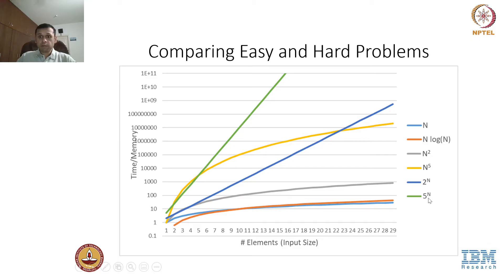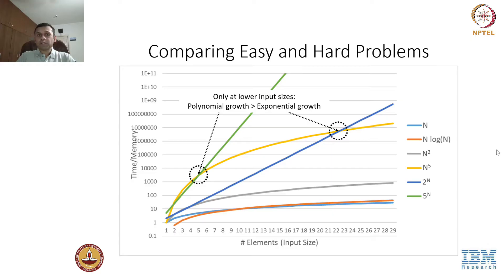At lower values, n to the power 5 can even dominate 5 to the power n and later also dominate 2 to the power n for a while. This means that at lower input sizes, a polynomial function can actually grow faster than an exponential function, depending on the polynomial degree and the base of the exponential. This means our classical computers that solve polynomially-growing problems are still going to be relevant when we have quantum computers. Quantum computers promise to solve problems that are inherently exponential in their time or space requirements, but for lower input sizes, classical computers may actually perform better than quantum computers.